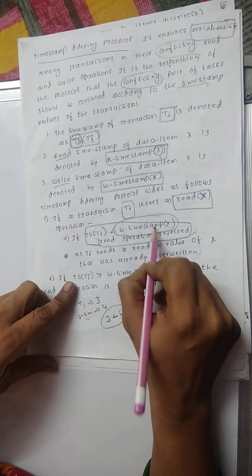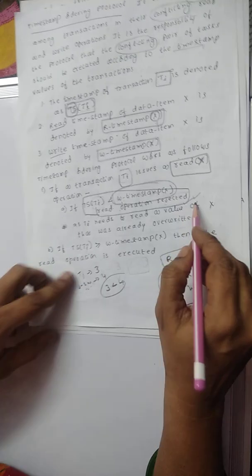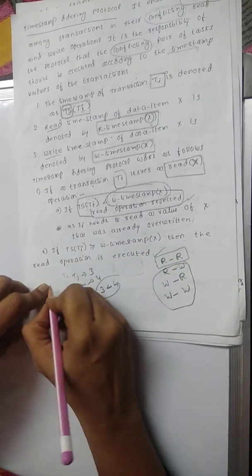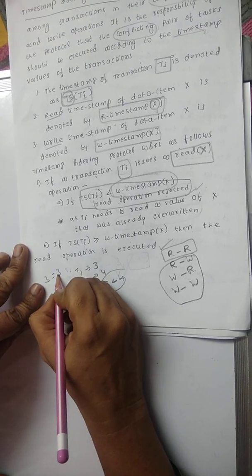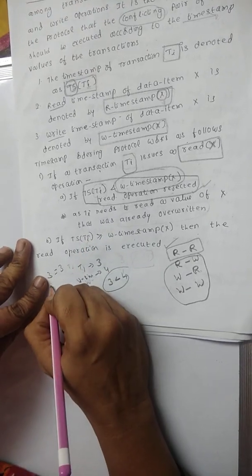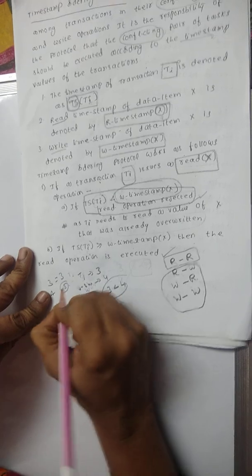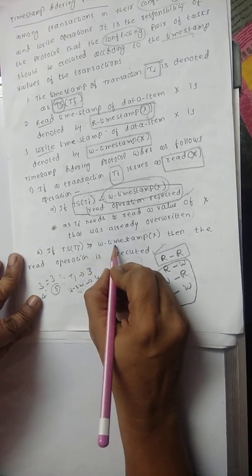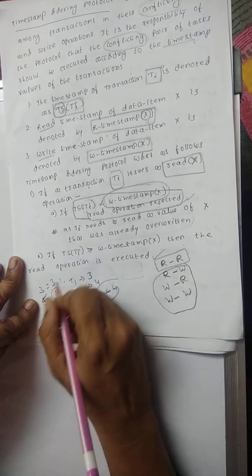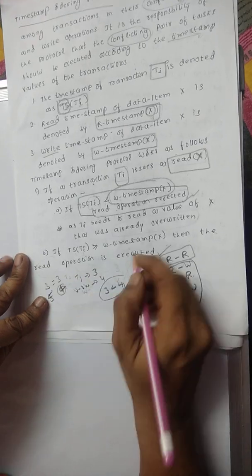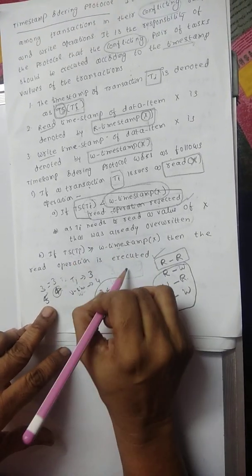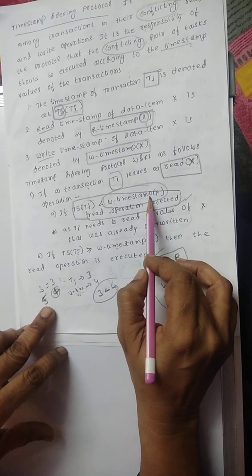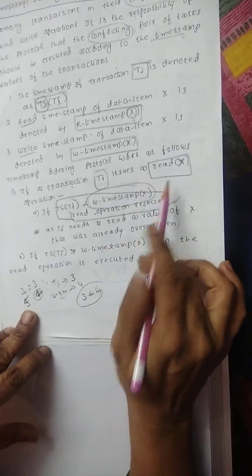If TS of Ti is less than W-timestamp of X, the read operation is rejected. However, if TS of Ti is greater than or equal to W-timestamp of X — for example, TS of Ti is 5 and W-timestamp value is 4 — then the read operation is allowed to execute. This avoids the overwriting problem. So TS of Ti less than W-timestamp of X means read operation is rejected; otherwise, read operation is performed.